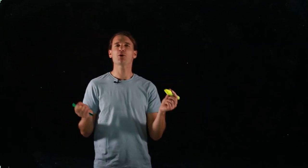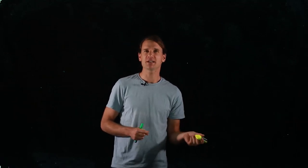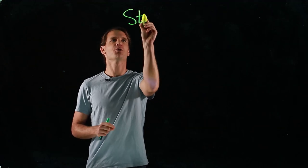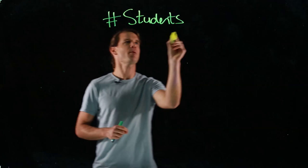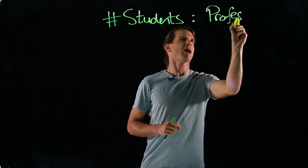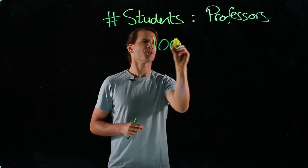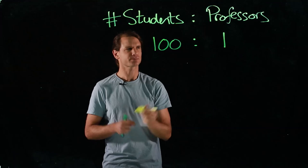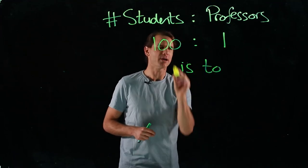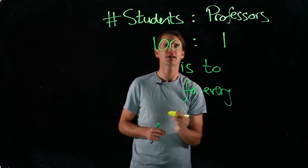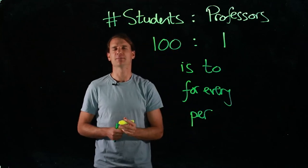Hi everyone, welcome to this very brief introduction to ratios. Let's remind ourselves what a ratio is. If I say that at our university there are 100 students for every professor, we could write that as a ratio: number of students to professors, written as 100 is to 1 — 100 students for every one professor, or 100 students per professor. That's a basic ratio, and we find ratios everywhere, particularly in scientific subjects but also in everyday life.